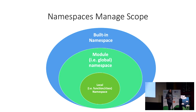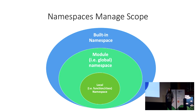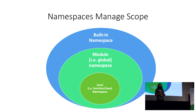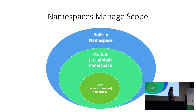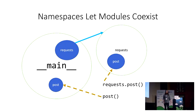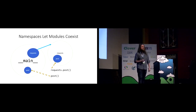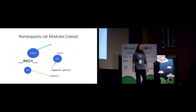Namespaces nest inside each other like Russian dolls. The outermost namespace contains the keywords built into Python itself. Inside that is a namespace for the module where your code is currently running — we call that the global namespace. If your code is inside a function or class, there'll be a special local namespace attached to that function. So if I reference a variable called 'spam' inside a function, the interpreter checks the local namespace, then the module namespace, then Python's built-in keywords. If it's not found anywhere, Python raises a NameError. Namespaces are really helpful for the import system because they let modules smoothly coexist — you can define your own 'post' function and still use the 'post' function from the requests module, because they live in different namespaces.